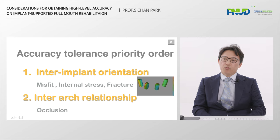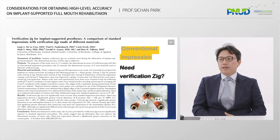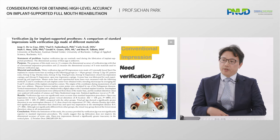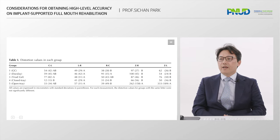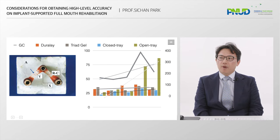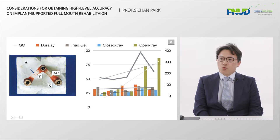Here is an interesting research paper. It tells the accuracy of impression using a verification jig and two types of coping impression — open and closed tray types. Resin materials from three different companies were tested. Surprisingly, three different material verification jig techniques produce much more errors than closed tray impression. We can recognize that some kind of polymerization shrinkage exists, and this force can distort inter-implant orientation.